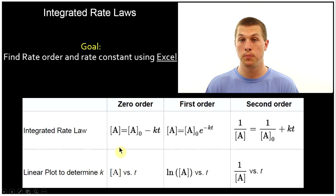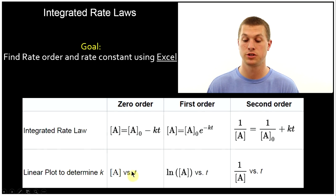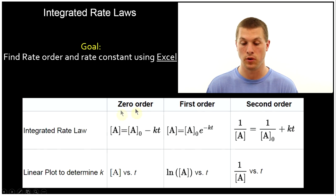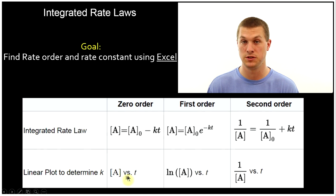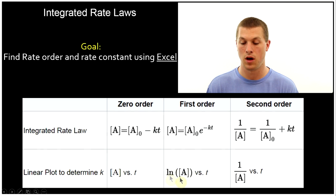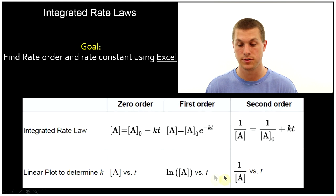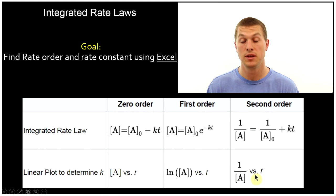Importantly, if we plot our concentration, or some version thereof, versus time, we'll get a straight line under different circumstances for different reaction types. For zero-order, plotting A versus T gives a straight line. For first-order, plotting the log of concentration versus time gives a straight line. For second-order, plotting one over concentration versus time gives a straight line.